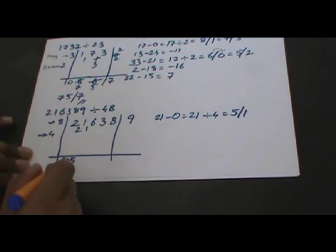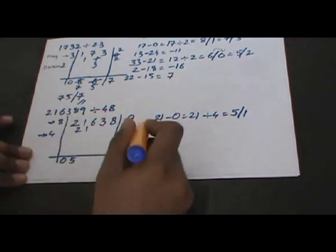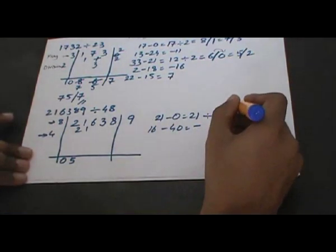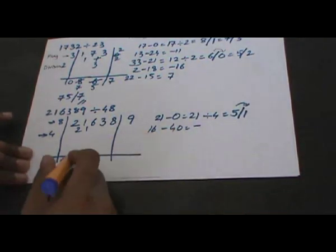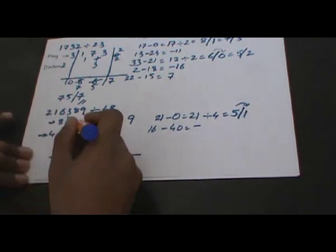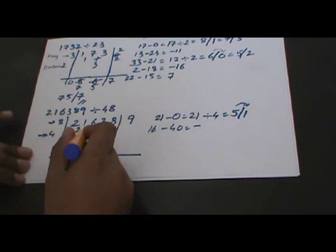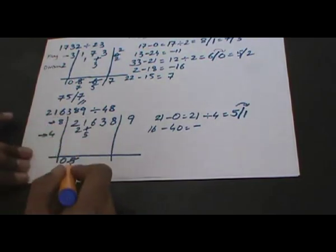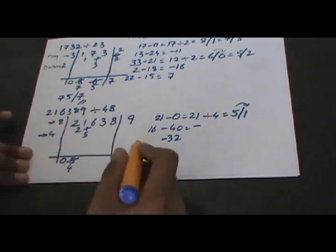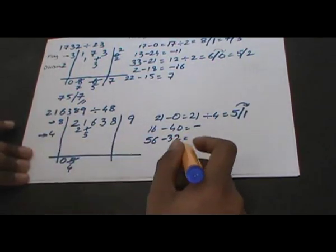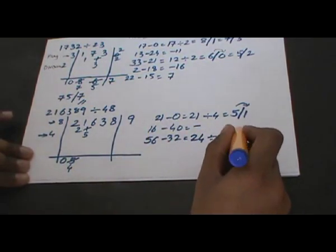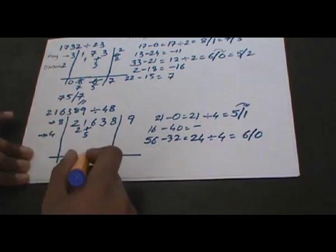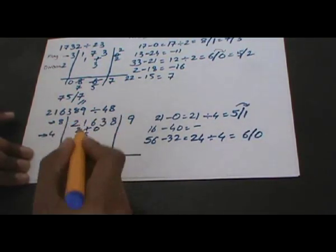8 multiplied by 5 gives 40, subtracted from 16 gives a negative number. We do not want a negative number, so we decrease the quotient by 1 — it becomes 4 — and the remainder increases: 1 becomes 5. Now 8 multiplied by 4 gives 32, subtracted from 56 gives 24, which is positive. 24 divided by 4 gives quotient 6 and remainder 0.